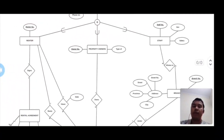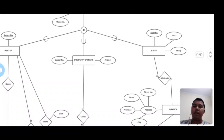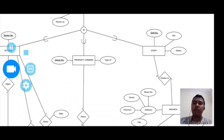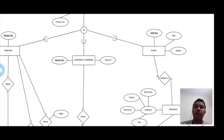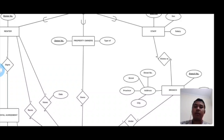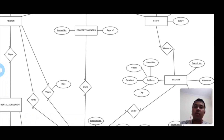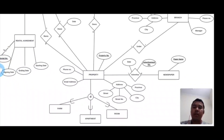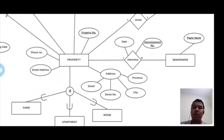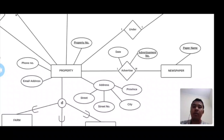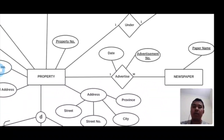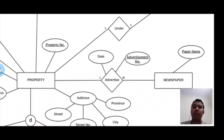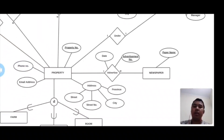The staff entity has attributes: staff number, sex, and salary. The staff number is the primary key. The staff entity shows a many-to-one relationship with the branch. The relationship from property to newspaper concerns the advertisement of the property. The advertisement shows the date and has attributes. Advertisement number can be the primary key, and in the newspaper relation, the paper name is the primary key.